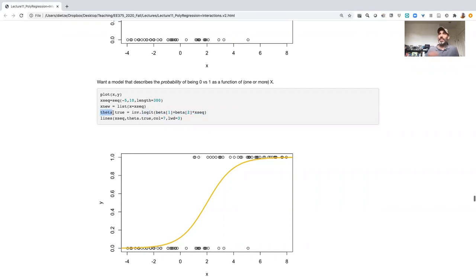In this case, a link function could be any function that transforms you from the continuous plus minus infinity range to the zero-one range of what makes sense as probability.